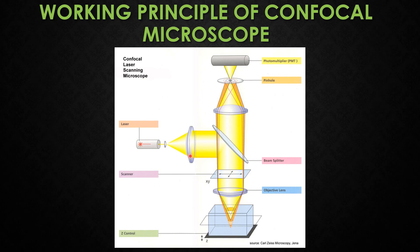One mirror tilts the beam in the x-axis and the other in the y-axis, and together they tilt the beam in a raster style. An objective lens focuses the beam onto the sample, and the fluorochrome-stained sample is excited and then emits fluorescence light, which travels back through the objective lens along the same path as the laser.